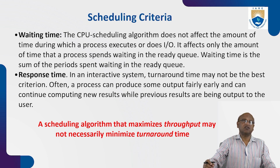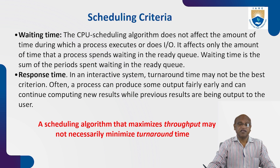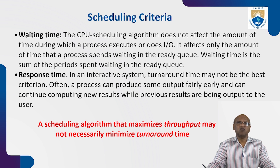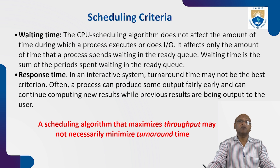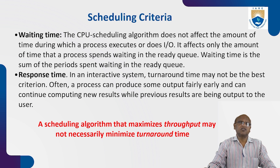Waiting time: the CPU scheduling algorithm does not affect the amount of time during which a process executes or does I/O; it affects only the amount of time a process spends waiting in the ready queue. Waiting time is the sum of the periods spent waiting in the ready queue. Response time: in an interactive system, turnaround time may not be the best criterion — a process can produce some output fairly early and continue computing new results while previous results are being output to the user.